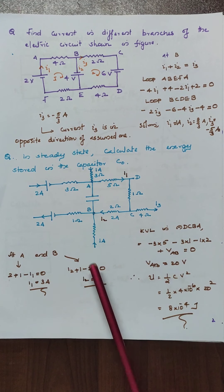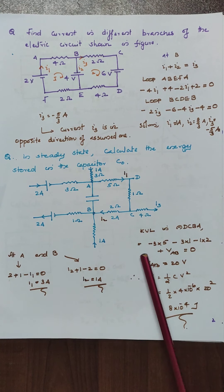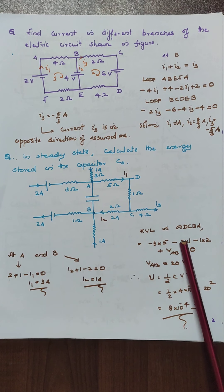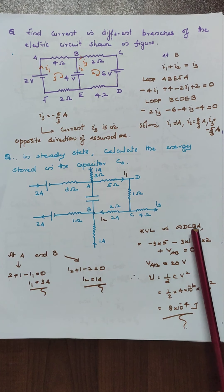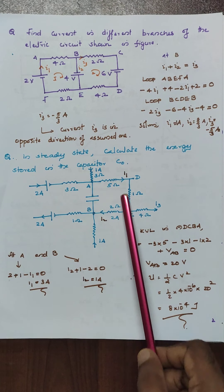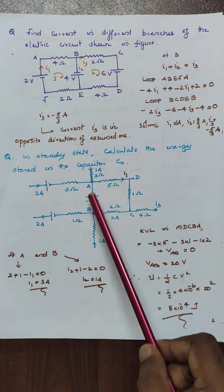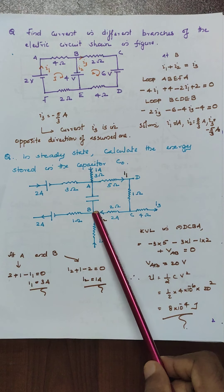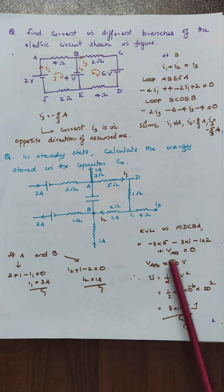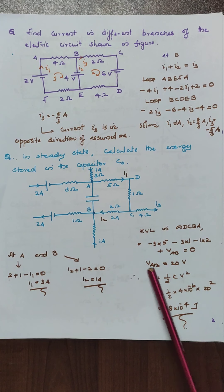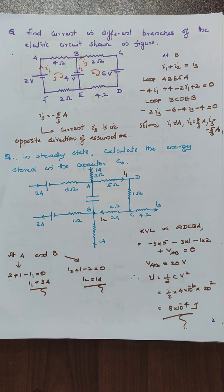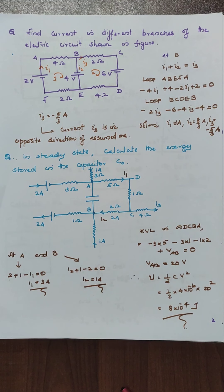Similarly at point B, we get the value. Then you can find the A, D, C, B, A loop. We have to find what is the potential difference VAB. You get the value VAB equal to 20 V. So we can easily find the energy as equal to half CV squared, and you get the value.